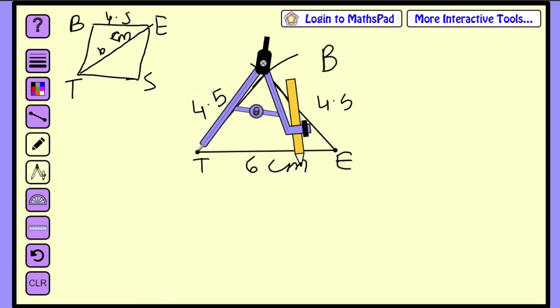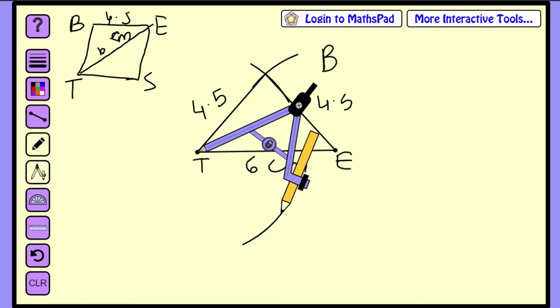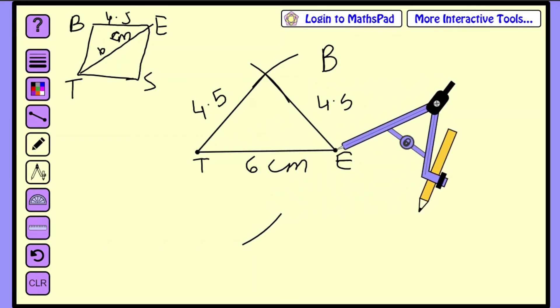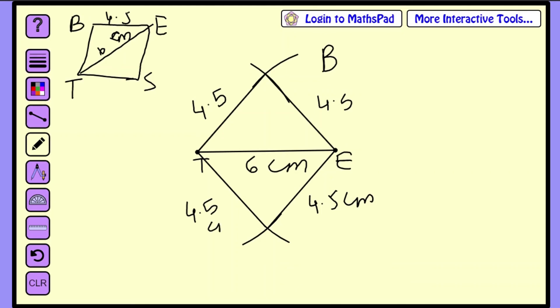Now we have to locate point S, which is at the same length. From E it is 4.5 and from T also it is 4.5. With the same compass, I am not changing the compass, I will draw an arc with T as center. This is an arc we have drawn. Now another with E as center this time, I have got an exact point where these two arcs are connecting. This point is S. TS join and ES we will join, and write the measurement 4.5 cm. This is our rhombus we have got. Here only one side 4.5 cm and diagonal 6 cm, these two things were given, and we use the property of rhombus.